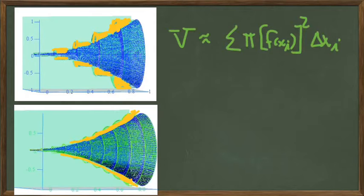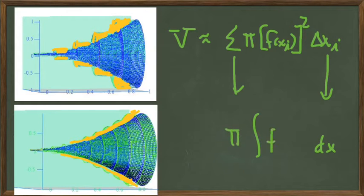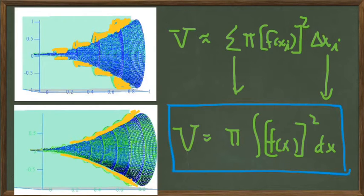So we're going to let those widths get smaller and smaller until they go to dx, and our summation sign is going to turn into an integral sign. We get this pretty simple formula for finding volumes of rotation by the disk method, at least when we're revolving about the x-axis.